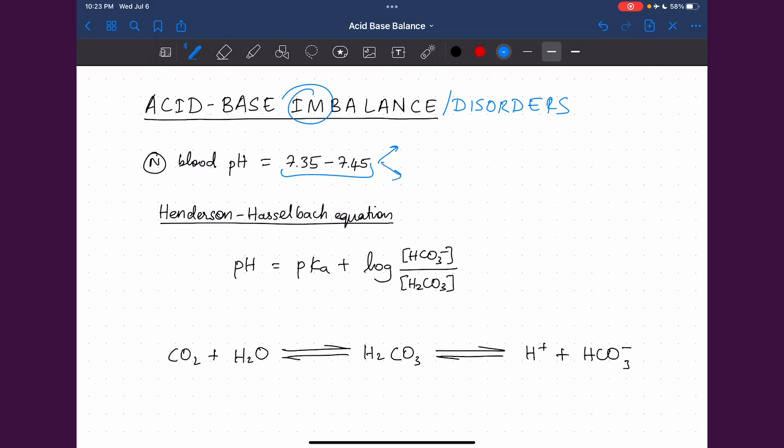If the blood pH rises more than 7.45, then it is called alkalosis. And if the blood pH reduces less than 7.35, then it is called acidosis.